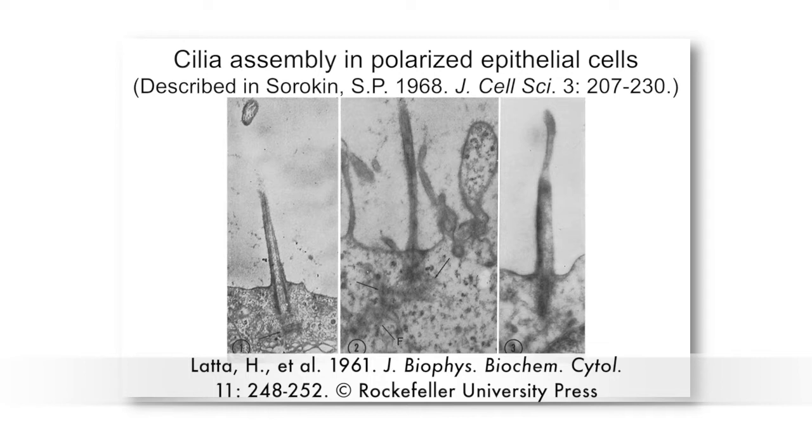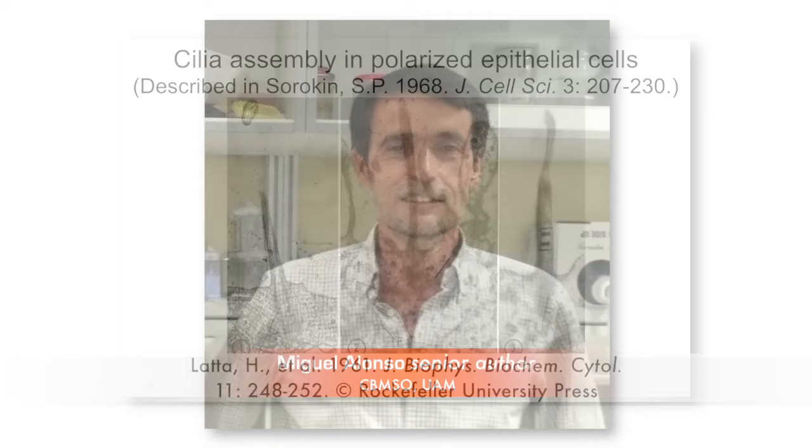Miguel Alonso, from the Autonomous University of Madrid, explains more. Despite its relevance, research on primary ciliogenesis has concerned itself almost exclusively with the intracellular pathway. But the existence of an alternative route in polarised epithelial cells has remained largely unexplored since the classic work of Sorokin nearly 50 years ago. So we decided to analyse how polarised epithelial cells assemble a primary cilium.